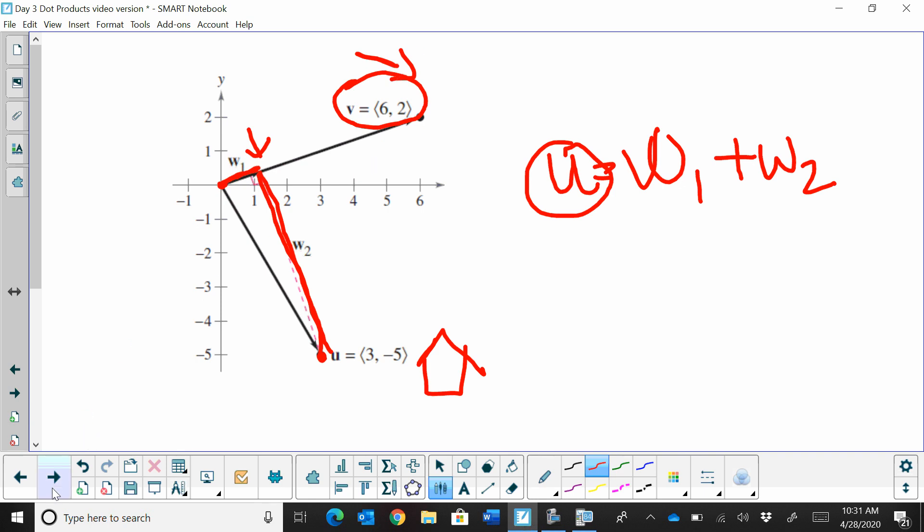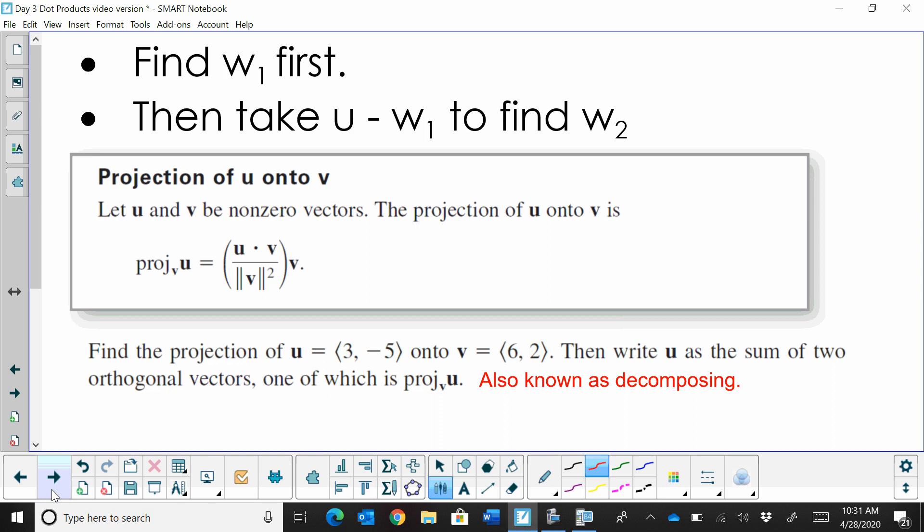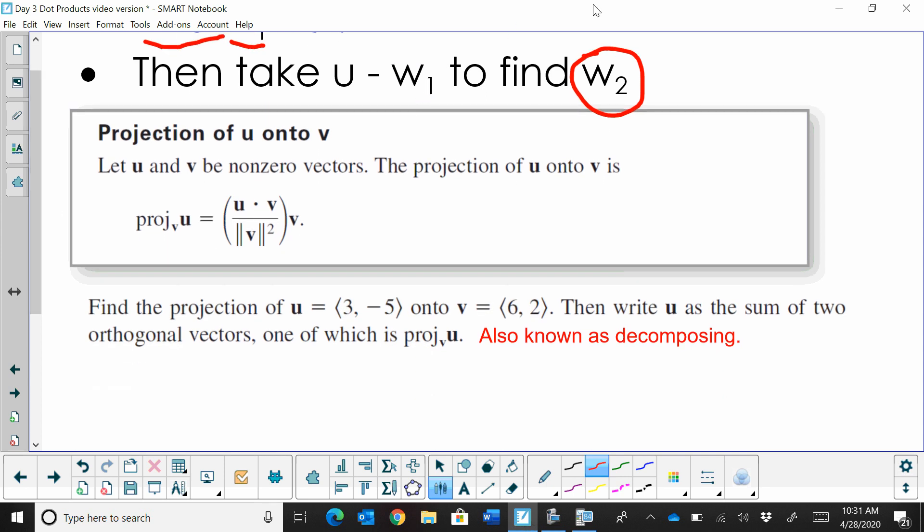So once you understand what we're doing, it makes more sense. What do you do? First, we have to find the first distance, or w sub 1. How far do we go up v before we turn? Then to find the second vector, we're going to take u and subtract w sub 1 to find that distance.